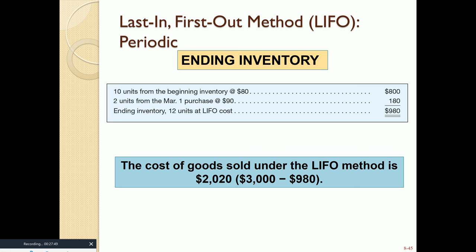For LIFO in the periodic system: ending inventory consists of the oldest purchases. Starting with the beginning inventory of 10 units at $80 ($800), then 2 units from the March 1st purchase at $90 ($180), totaling $980. Cost of goods sold is $3,000 minus $980, equaling $2,020.